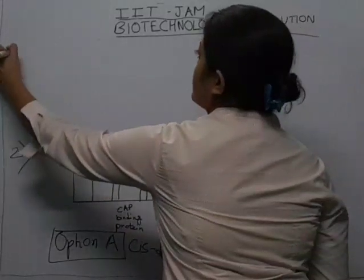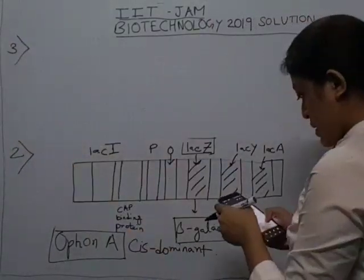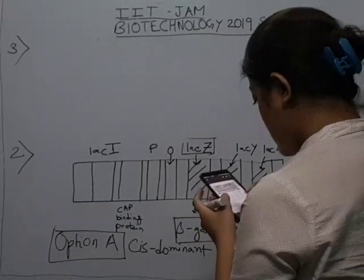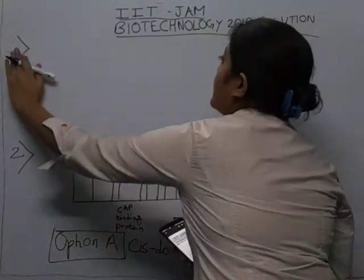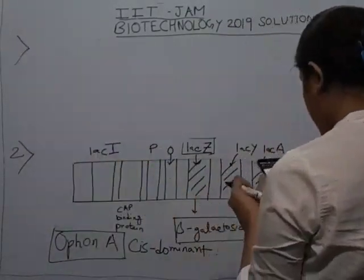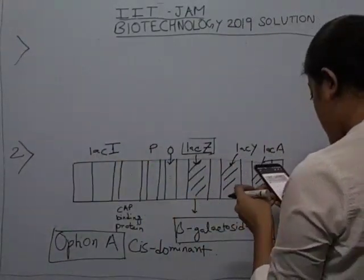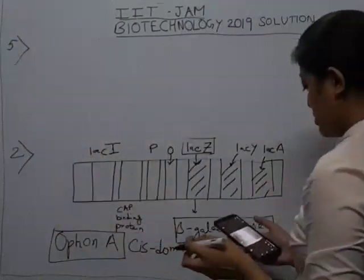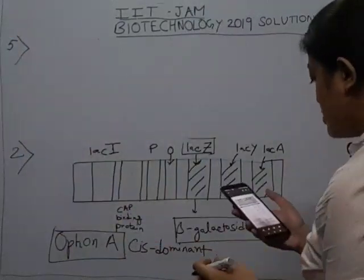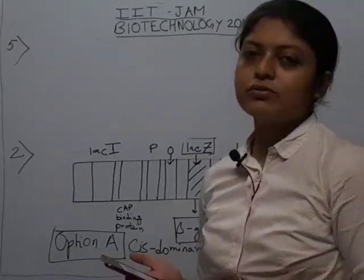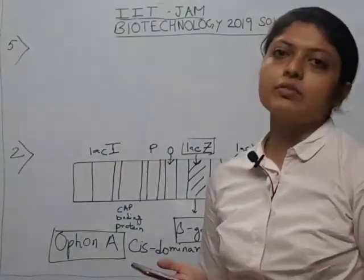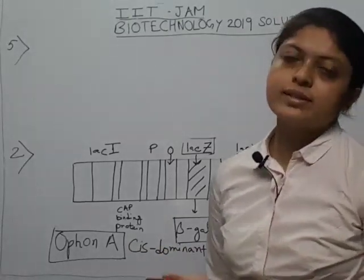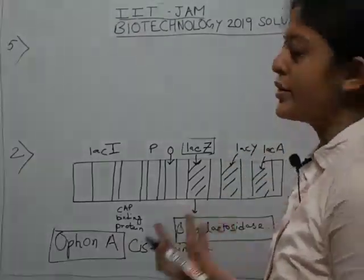Moving on to the next question — question number 5, which also comes from the biology section. It's a very simple part of cell cycle. We know very well how the cell cycle looks like, so let's draw it to be clearer.